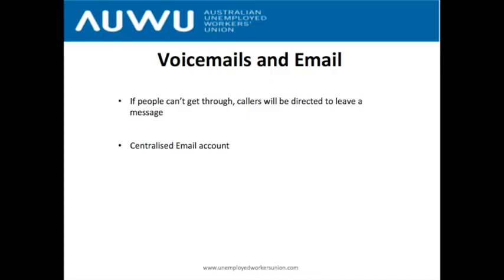Next, voicemails and emails. If people can't get through to the hotline, they'll be directed to the voicemail and leave a message, which gets automatically emailed to the Unemployed Workers Union's advocacy account. People making callbacks simply log in to that email, listen to the message, and call back. This is a really good way to start helping with advocacy because you're not put on the spot — you can do the research before calling, then give them the help they need and fill out the intake form.